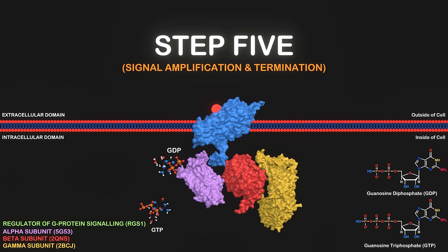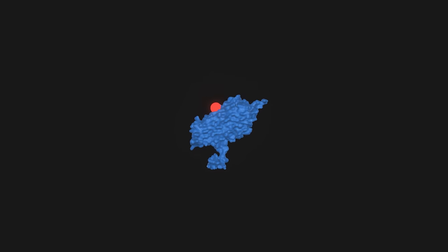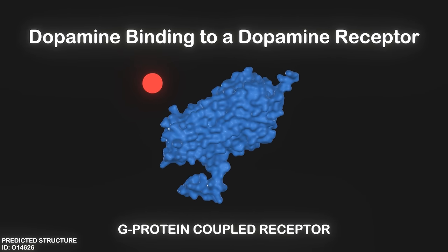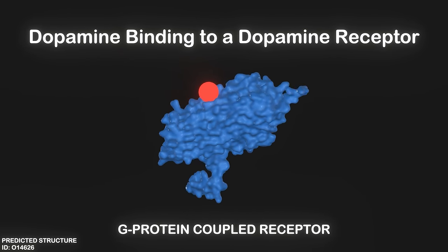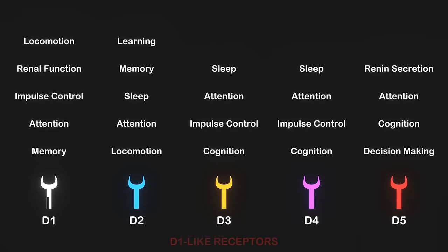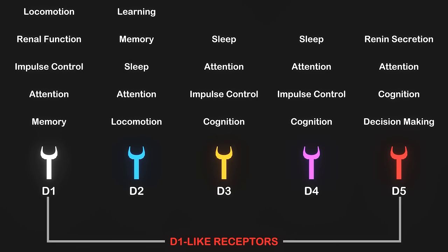Once the GPCR cascade is complete, several different physiological responses can occur depending on the type of G-protein as well as the cellular context. For example, let's talk about the context of dopamine signaling. Dopamine binds to dopamine receptors, which are a class of G-protein coupled receptors. These receptors can be broadly classified into D1-like receptors, which includes D1 and D5 receptors, in addition to D2-like receptors, which includes D2, D3, and D4.